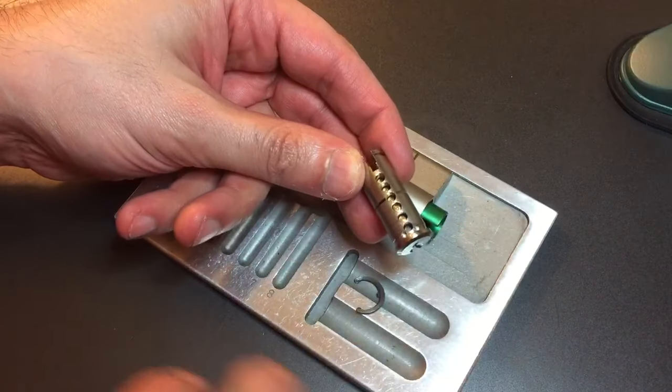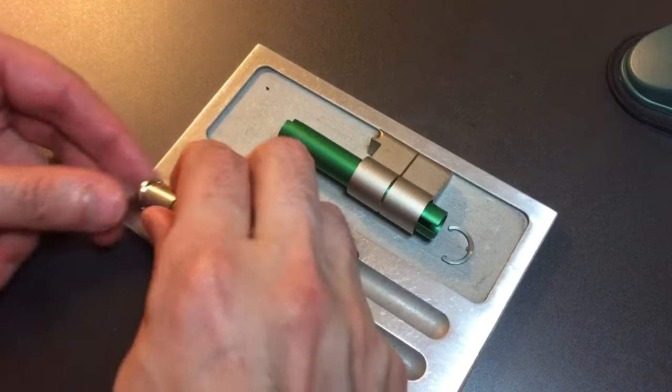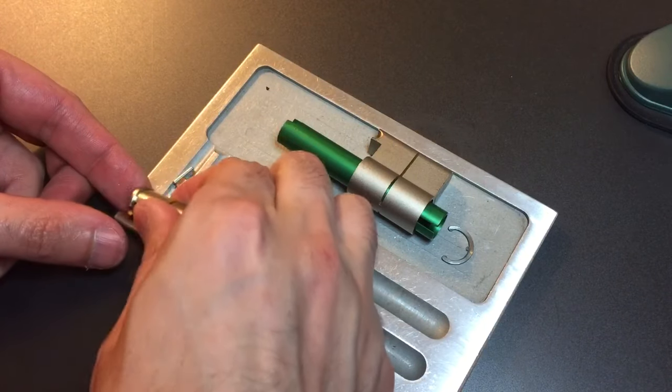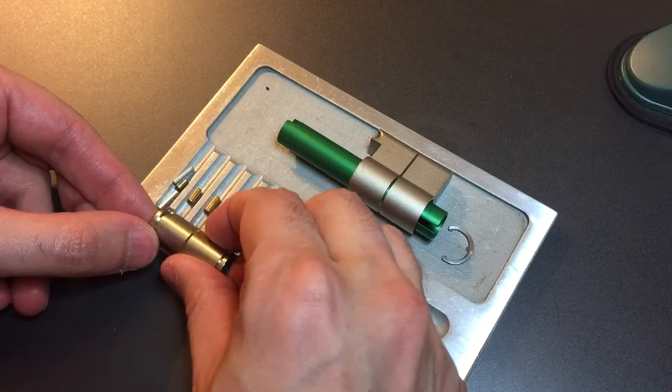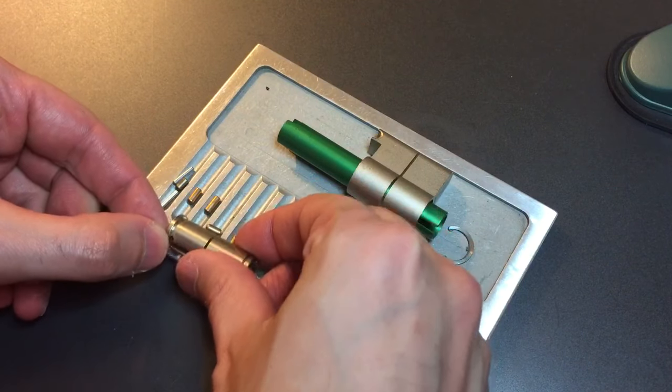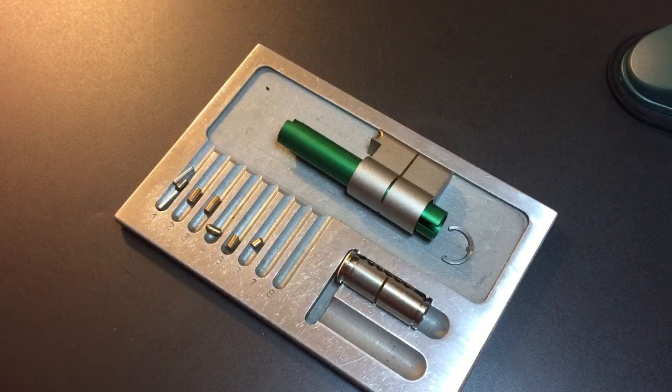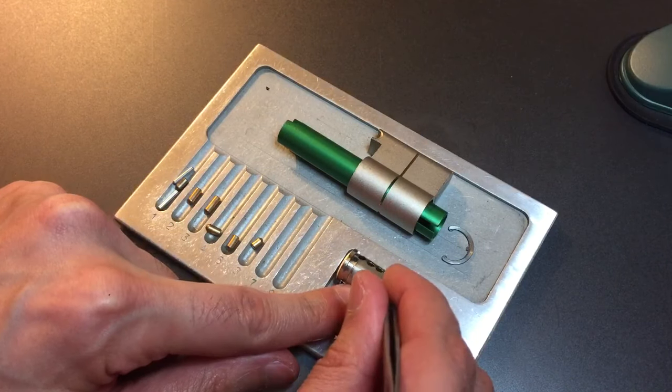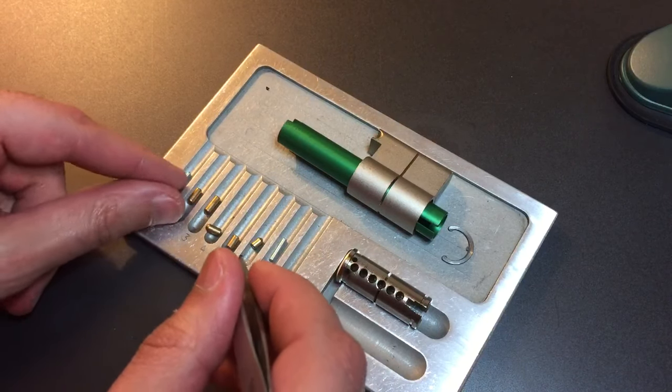Okay we can see our six pins looks like number one is a steel anti-drill pin. Let's dump all of these pins out. Okay there's one, two, three, four, five, and six. It looks like we dropped out a couple pieces of drill protection from the front of the core. Let me put them over in slot seven.